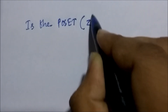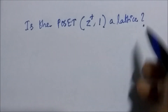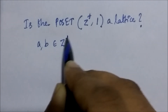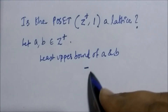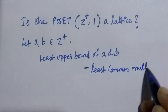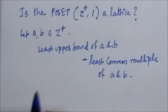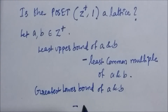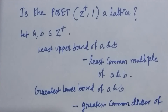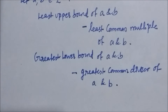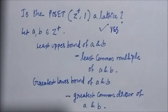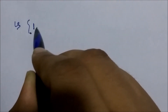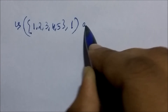Is the partially ordered set (Z+, divides) a lattice? For any elements a, b in the positive integers, the least upper bound is the least common multiple (LCM) of a and b, and the greatest lower bound is the greatest common divisor (GCD) of a and b. Since LCM and GCD exist for every pair, the poset (Z+, divides) is a lattice.